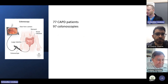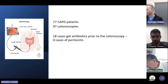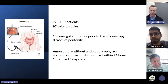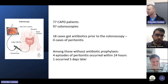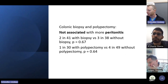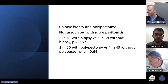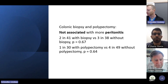In one study, 77 CAPD patients underwent 97 colonoscopies. 18 cases got antibiotics prior to colonoscopy and none of them developed peritonitis. Among those without antibiotic prophylaxis there were four episodes of peritonitis within 24 hours and one that occurred five days later. Colonoscopy-related peritonitis is defined as development of peritonitis within one week of the procedure. Colonic biopsy and polypectomy in this study was not associated with more peritonitis — two out of 41 with biopsy versus three episodes in 38 patients without biopsy, and one in 30 with polypectomy versus four cases in 49 without.